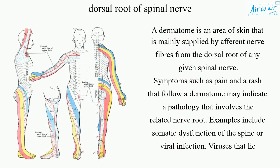A dermatome is an area of skin that is mainly supplied by afferent nerve fibers from the dorsal root of any given spinal nerve. Symptoms such as pain and a rash that follow a dermatome may indicate a pathology that involves the related nerve root. Examples include somatic dysfunction of the spine or viral infection.